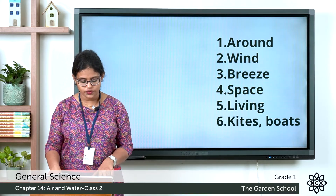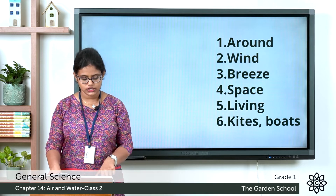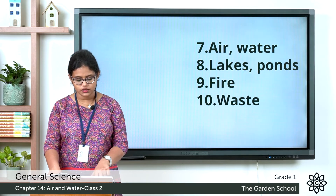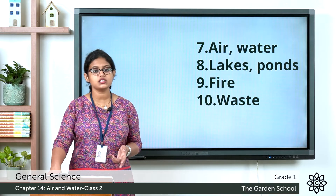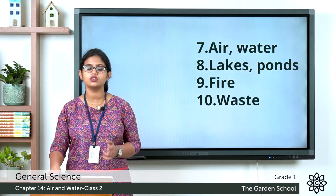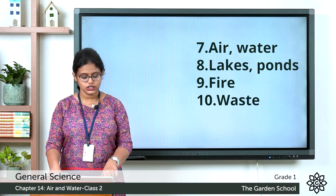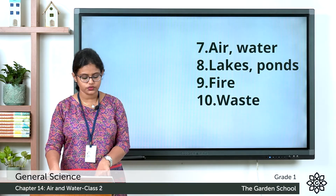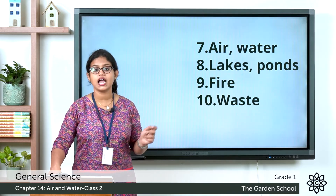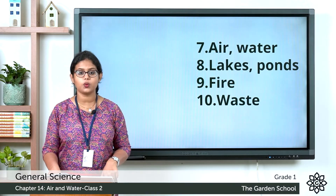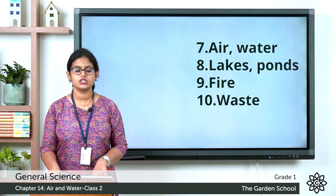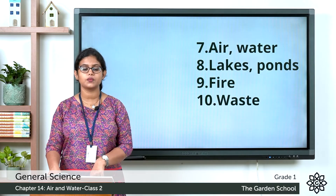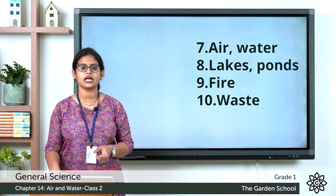Sixth one: air is used to fly kites and sail boats. Next one: all plants and animals need air and water to live. Eighth one: we get water from lakes, rivers, ponds and wells. Ninth one: water is used to put out fire. Tenth one: we should not waste water — the answer is waste.